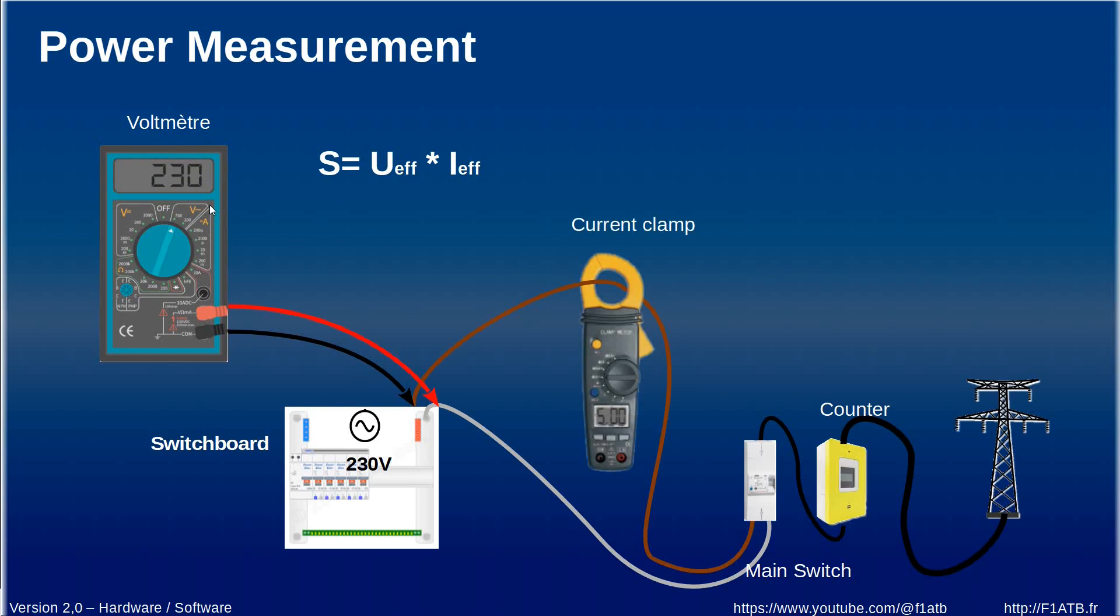If we put a current clamp at the input of the current in the house we have for example 5 amps. That means we are currently consuming 230 volts multiplied by 5 amps which correspond to 1150 volt amps. The situation we have is with these two displays we don't know if the power is incoming or outgoing.